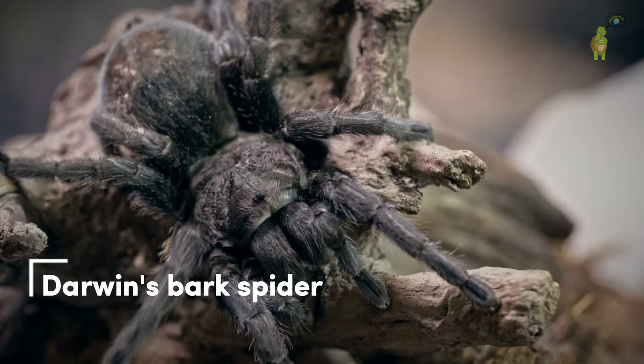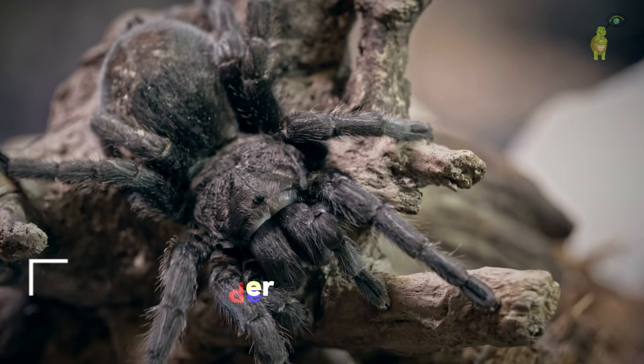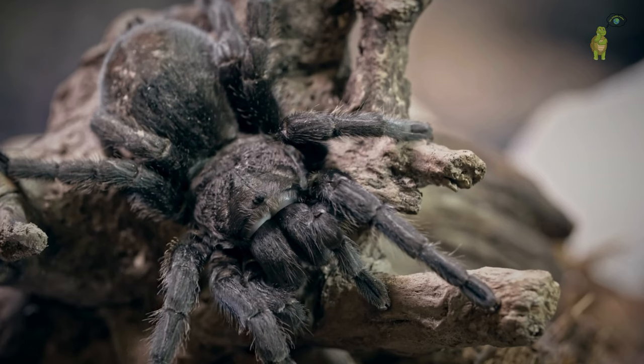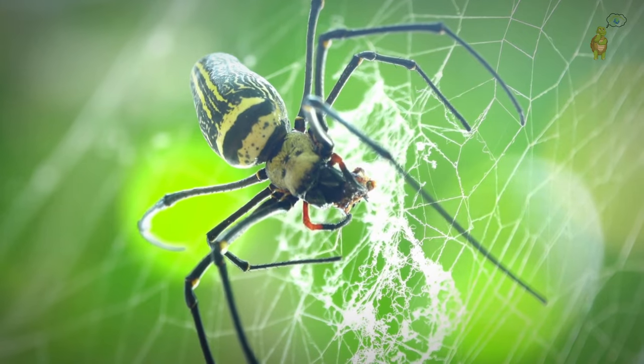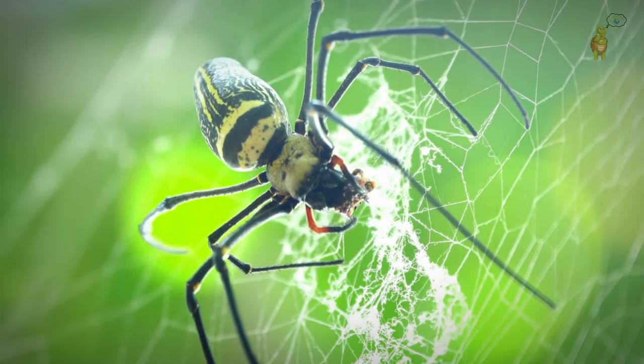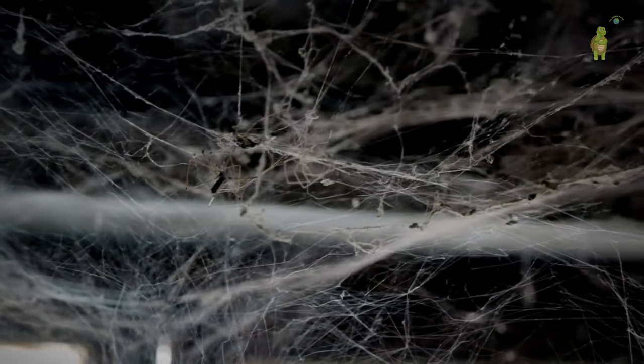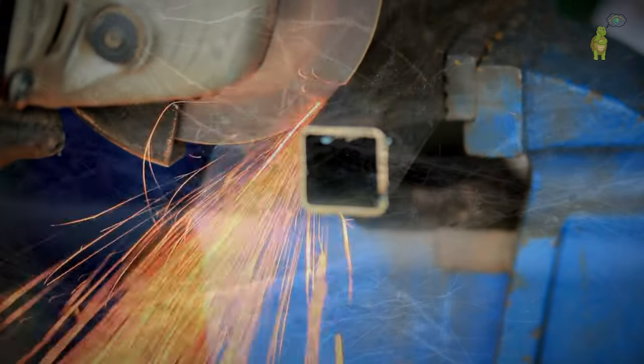The Darwin's bark spider, discovered in 2010, has silk that stands out for its exceptional strength. Tests revealed that silk from this spider is over twice as tough as that from any other spider species and more than 10 times tougher than Kevlar.